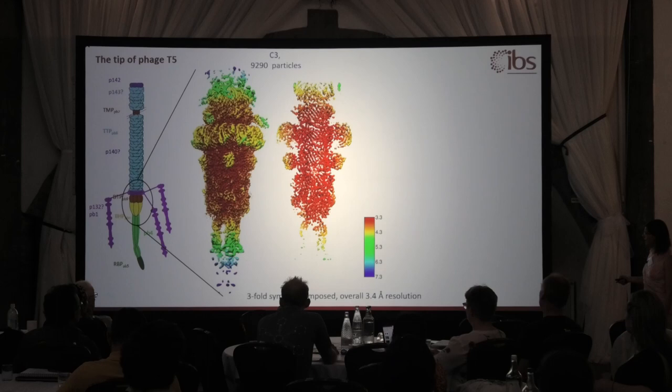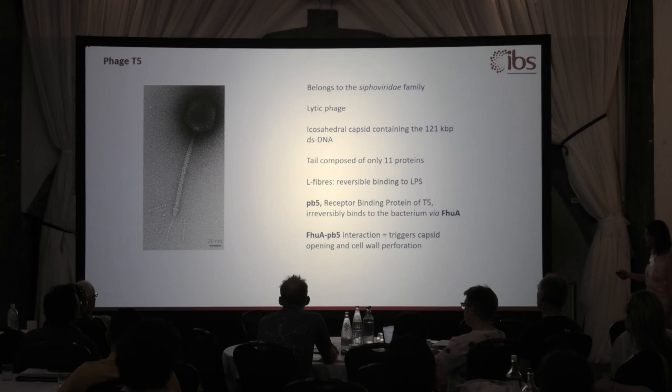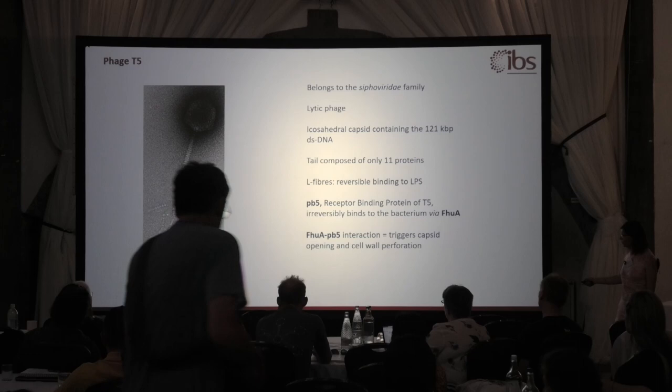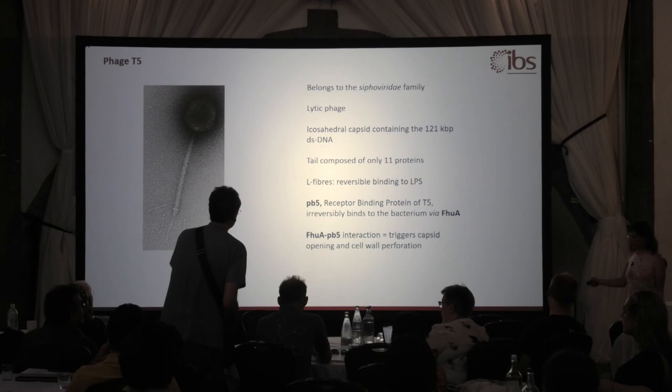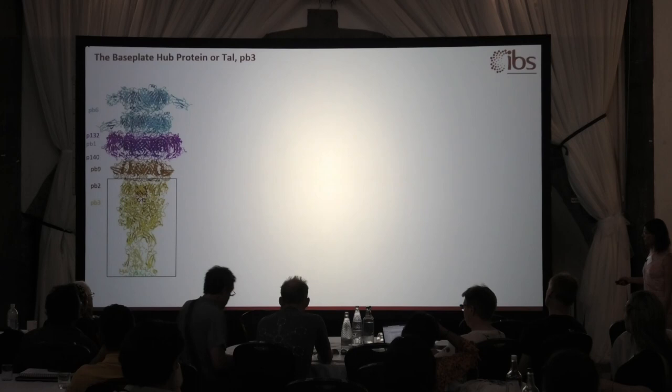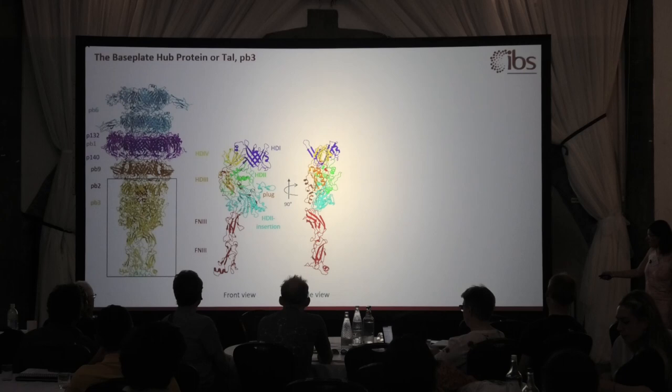Let me come back to introduce the context. You have the L-fiber sphere, the extremity of which binds to the lipopolysaccharide. They allow the phage to walk on the membrane until PD5, which is the receptor binding protein at the tip of this straight fiber sphere, meets QA. This is the trigger for infection. The straight fiber is formed on its upper part by two fiber-folding domains of this base plate hub protein.